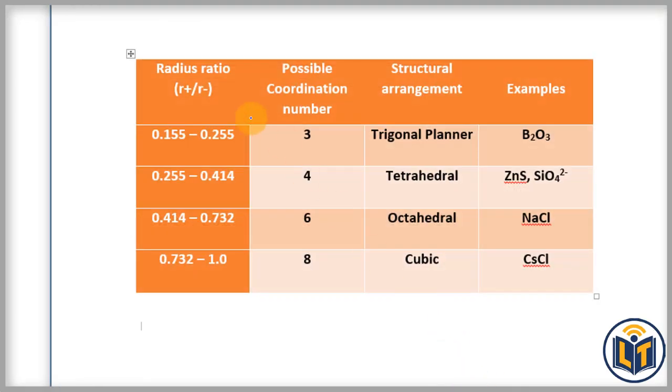NaCl has the structural arrangement that is octahedral, and for octahedral the range of radius ratio is 0.414 to 0.732. Then the formula for the radius ratio becomes r+ (cation) divided by r- (anion) is equal to 0.414.